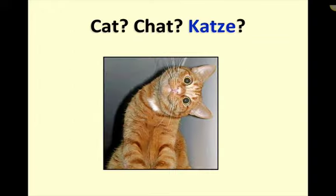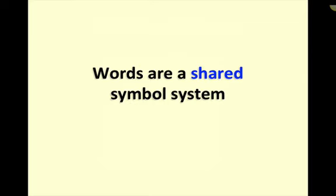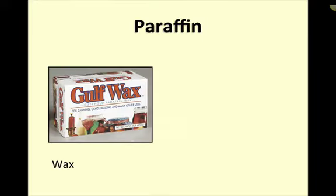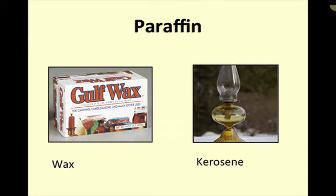Words mean what they do by convention, not because of truth. There is nothing inherently fluffy or cute about the word 'cat' — it's just that we all use that symbol to mean this particular mammal. Words are a shared symbol system, but it's a symbol system that isn't complete and it's not completely shared, which gives you the potential for distortion when you're trying to use words to communicate. Consider the word 'paraffin.' If you make jam in the U.S. and walk into a store and ask for paraffin to seal it, it's wax. But everywhere else in the world, the word paraffin means kerosene.